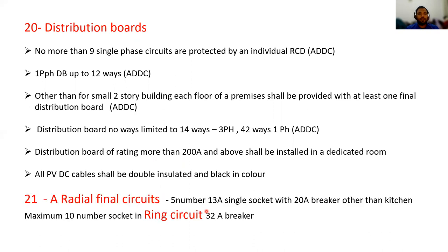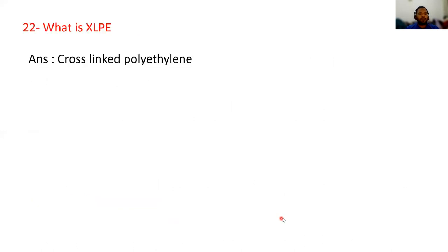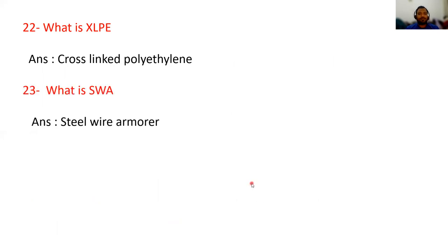Question 21: a radial final circuit — what is a radial circuit? A maximum of five 13-ampere single sockets with a 20-ampere breaker, other than kitchen. What is a ring circuit? A maximum of 10 sockets in a ring circuit with a 32-ampere breaker. What is XLPE? Cross-linked polyethylene — it's called XLPE. What is SWA? Steel wire armour.